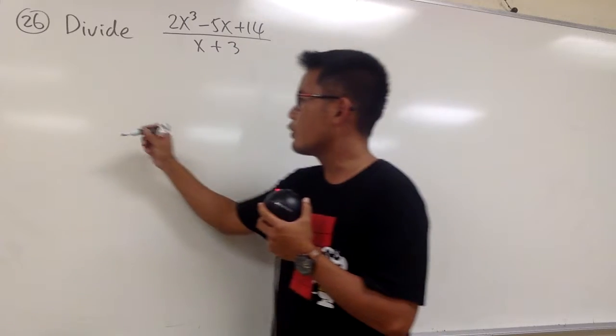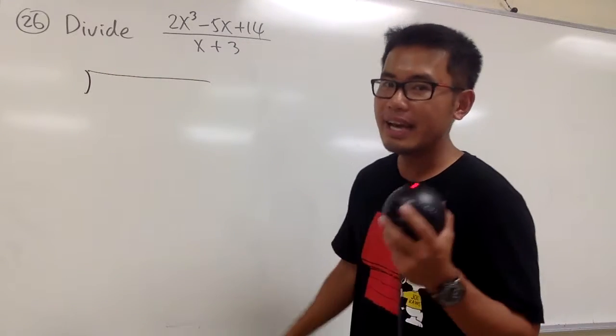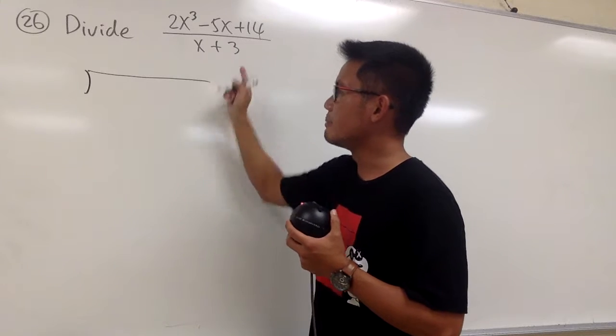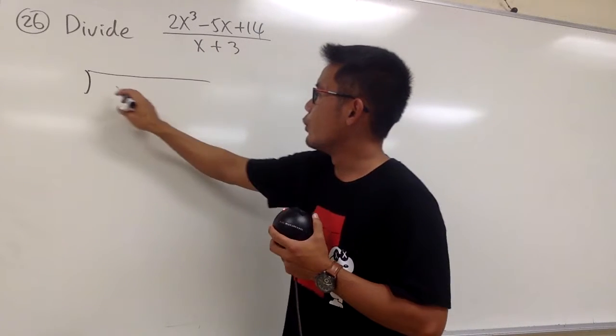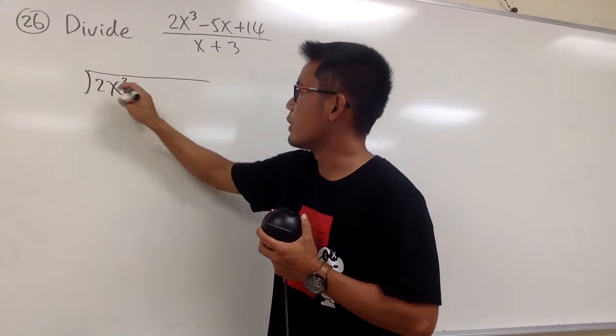So to do that, of course, we have to use the long division bar first, and we'll put down the top inside and the bottom outside. So you see that right here, we have 2x to the third power, right?